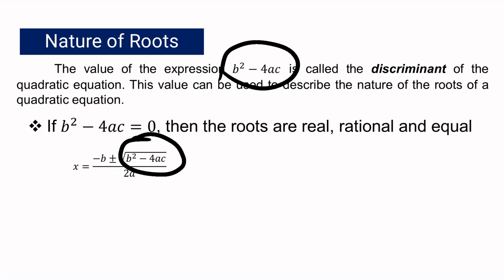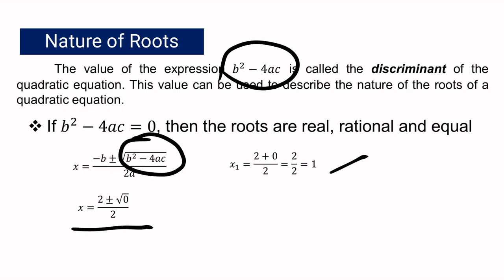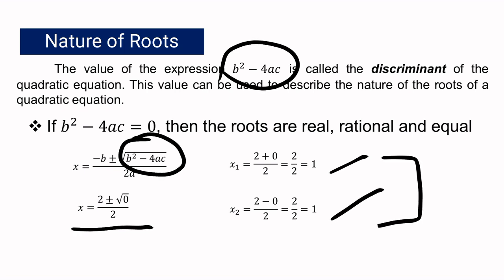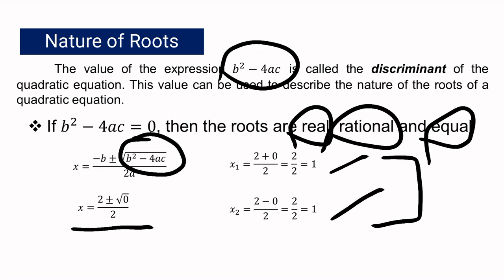Using the quadratic formula, let us prove the first case. If b squared minus 4ac is equal to 0, the square root of 0 is 0. So x sub 1 will be negative b plus 0, all over 2a, which gives x sub 1 equal to 1. Taking the negative root, negative 0 is still 0, so x sub 2 is also equal to 1. As you can see, x sub 1 is 1 and x sub 2 is also 1 — the roots are equal. And of course, 1 is a real number and also a rational number. So if the discriminant equals 0, the roots are real, rational, and equal.